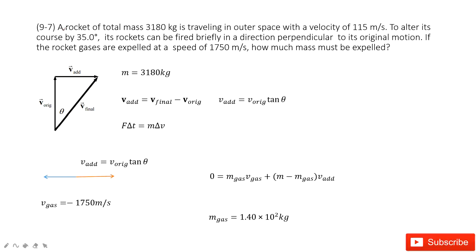So first, the total mass of the rocket is given as 3180 kg. And this rocket travels with a velocity of 115 meters per second. We think it travels upward.